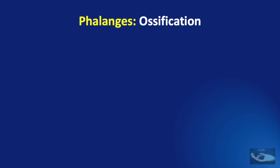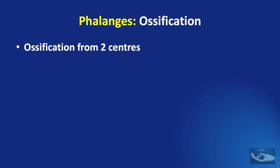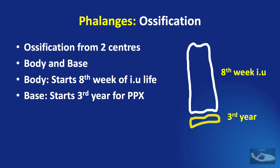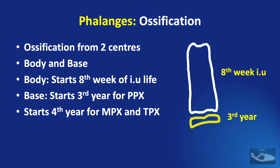The ossification pattern of the phalanges is very characteristic — they ossify from two centers: the body and the base. Ossification of the body starts from the eighth week of intrauterine life. The base starts from the third year for the proximal phalanx, and the fourth year for the middle and terminal phalanx. The centers for the body and base unite by 18 to 20 years of age.